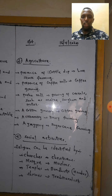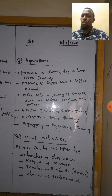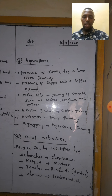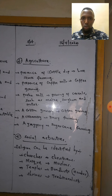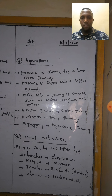In agriculture, crops such as coffee, tea, pyrethrum, and lotus can be identified. The presence of cattle indicates livestock keeping. The presence of a coffee mill indicates coffee growing. A posho mill indicates cereal farming.